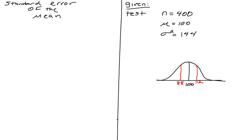Let's say that we have a test, and this is the data behind it. It's a large test and we took a random sample of 400. Our mean when we tabulated the scores is 100 and our variance is 144.